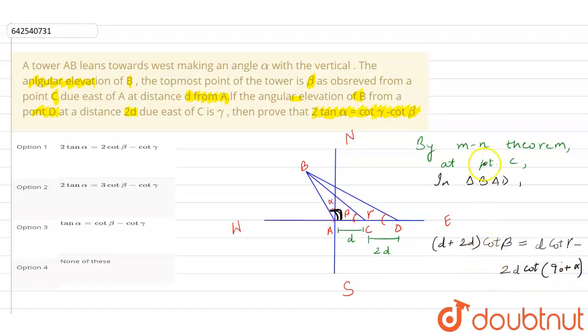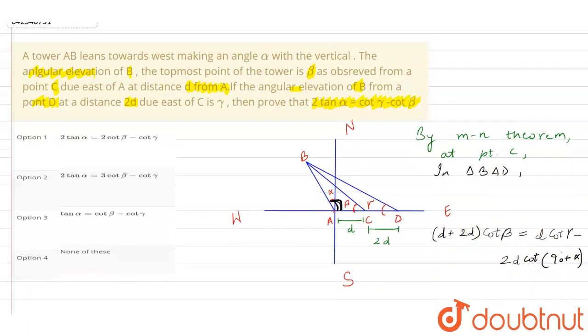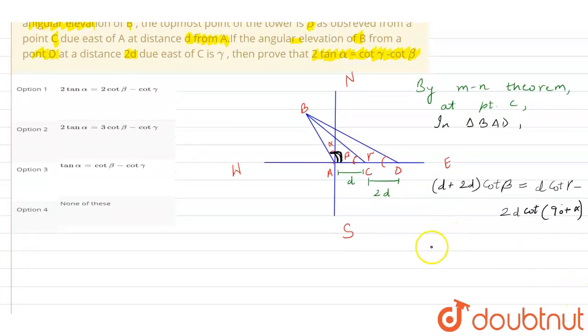Alright, so after applying MN theorem in this triangle, at point C we are applying this. So let's solve this. This will become 3D cot beta, 3D cot beta equals D cot gamma minus 2D cot, what is 90 plus alpha? Cot 90 plus alpha will change, so it will become tan alpha, 2D tan alpha.